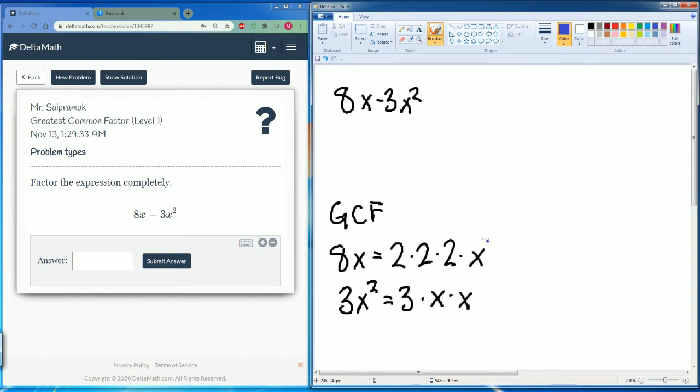Now we want to circle what they have in common. So they have an x in common and that's it. So we would say the GCF here is just x.